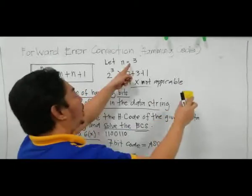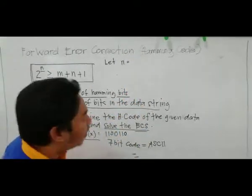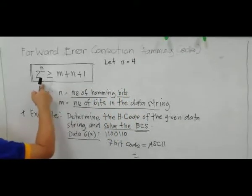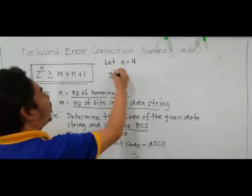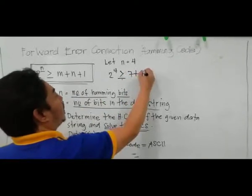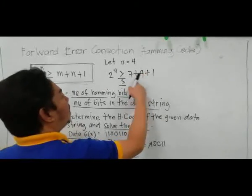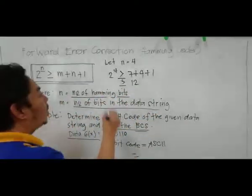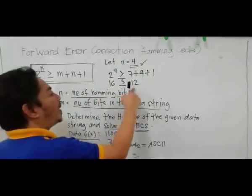We choose another value. Let n = 4. Then 2 raised to 4 must be greater than or equal to m plus n plus 1. With m = 7: 7 plus 4 plus 1 = 12. And 2 raised to 4 is 16. Since 16 is greater than 12, therefore n = 4 is our number of Hamming bits.